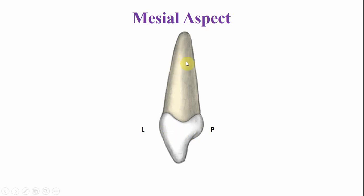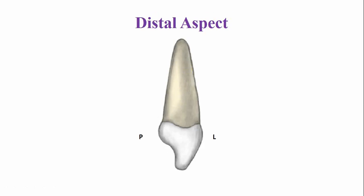This is the mesial surface. On the models you will see a developmental depression here — sometimes a developmental depression, sometimes a groove, is present. On the distal surface, the curvature of the cervical line is less if you compare it with the curvature of the cervical line mesially. Distally, the crown and root are generally convex and there is no developmental depression like that present on the mesial side.